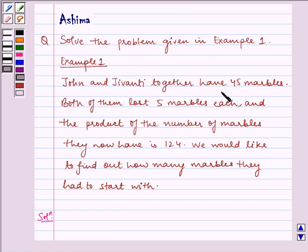John and Javanthi together have 45 marbles. Both of them lost 5 marbles each and the product of the number of marbles they now have is 124. We would like to find out how many marbles they had to start with.